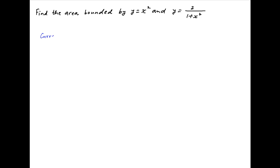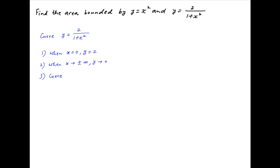We start by evaluating the curve y = 2/(1 + x²). Notice that when x = 0, the value of y is equal to 2. When x tends to plus or minus infinity, the value of 1 + x² tends to infinity and therefore the value of y tends to 0. Also, because of the x² term, the curve is symmetric about the y-axis.